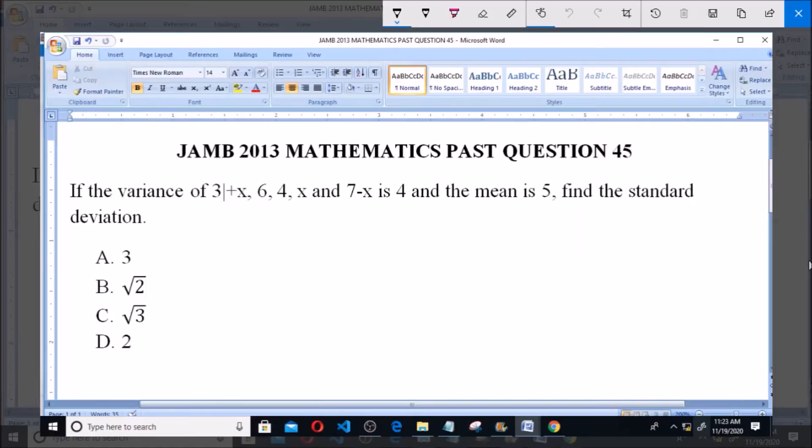Hello, good day and welcome. I'll be answering JAMB 2013 Mathematics past question 45. If the variance of 3+x, 6, 4, x, and 7-x is 4 and the mean is 5, find the standard deviation.